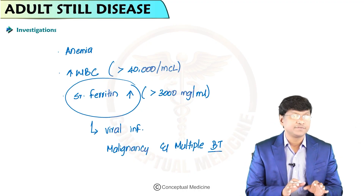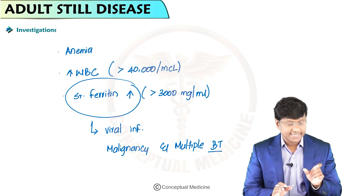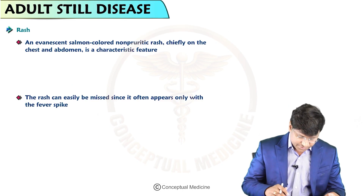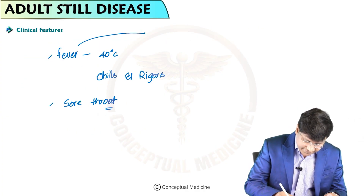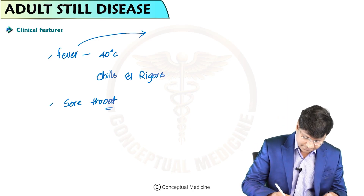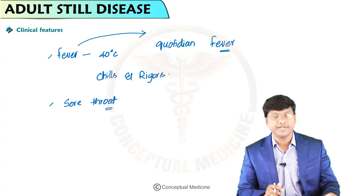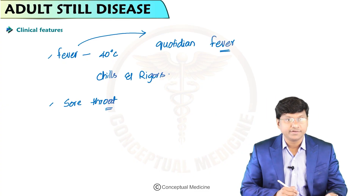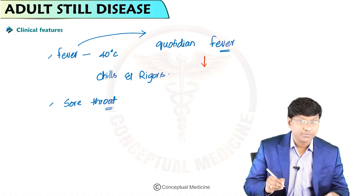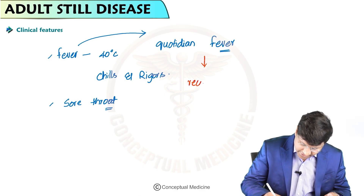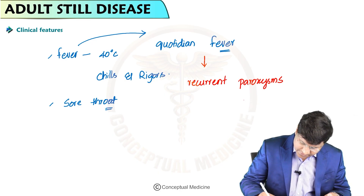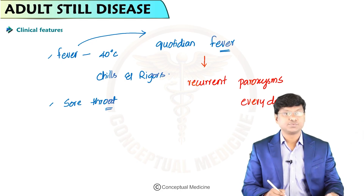Regarding the character of the fever in Adult Still's disease — we call the pattern of fever quotidian fever. Quotidian fever is a pattern where you have recurrent paroxysms or recurrent spikes every day. That is what is understood by the term quotidian fever.